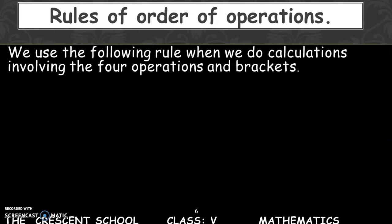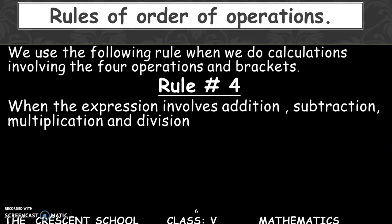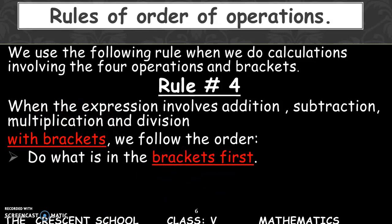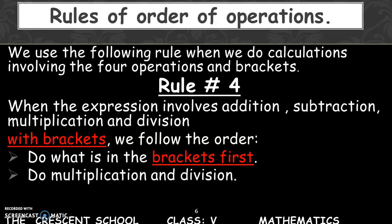For this we use the formula and rule when we do calculation involving the four operations and brackets. When the expression involves addition, subtraction, multiplication, and division with brackets, we follow the order. Do what is in the brackets first. I repeat, do what is in the brackets first. Do multiplication and division. Do addition and subtraction.